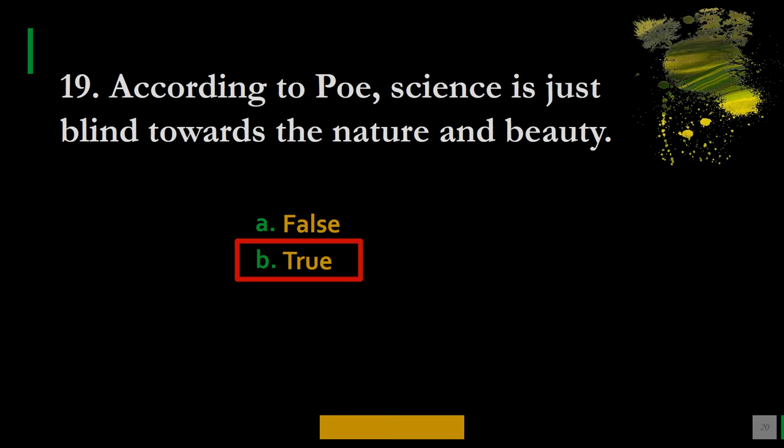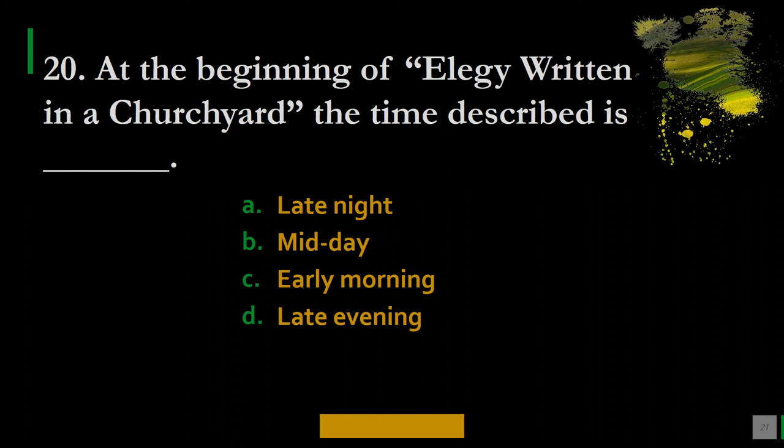Question 20: At the beginning of Elegy Written in a Country Churchyard, the time described is — A. Late night, B. Midnight, C. Early morning, D. Late evening. The correct option is D — late evening.